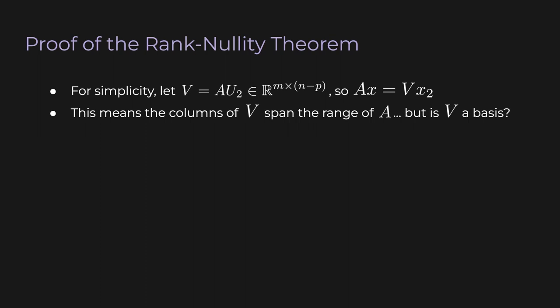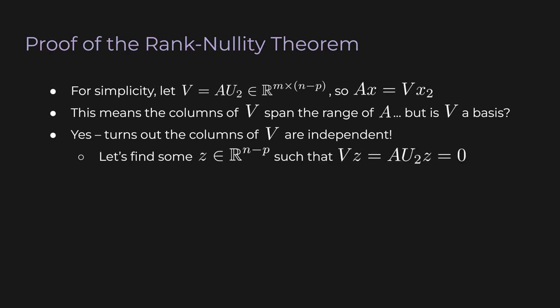But is V a basis? We know the columns of V span the range of A, but are those columns independent? Actually, yes. It turns out the columns of V are independent, and here's why. Recall that independence means that the only linear combination that produces the zero vector is the combination where all coefficients are zero. With that in mind, let's find some vector Z in R N minus P such that VZ equals zero.